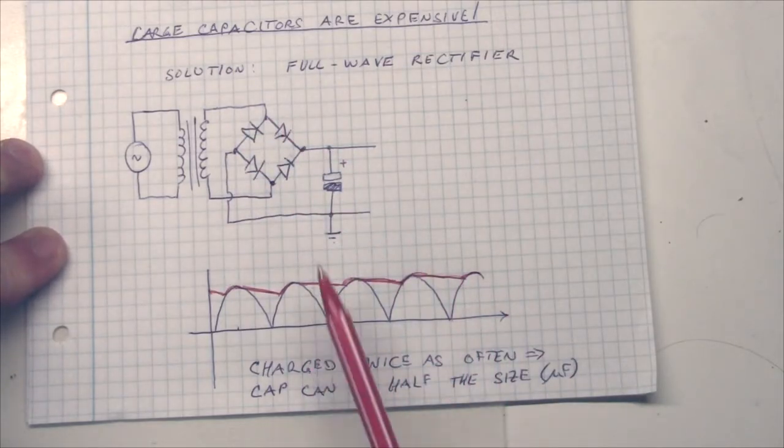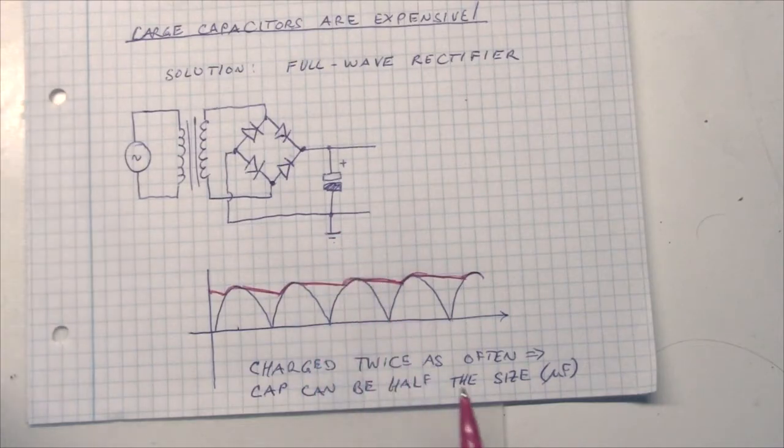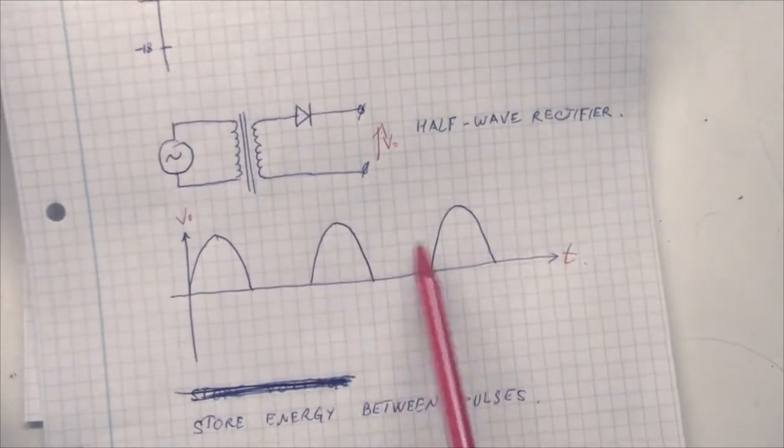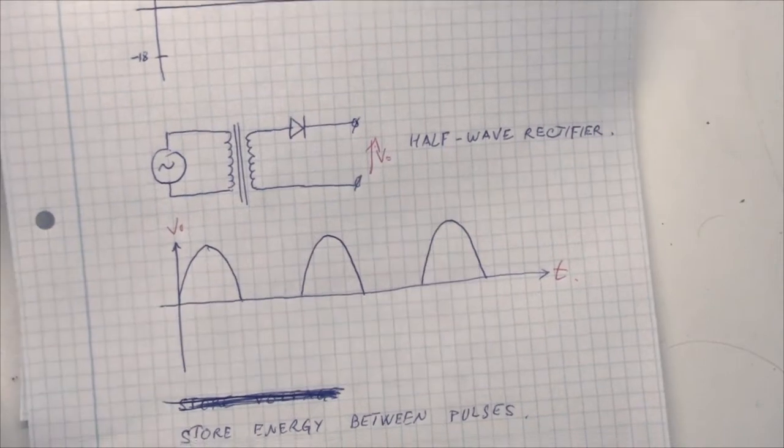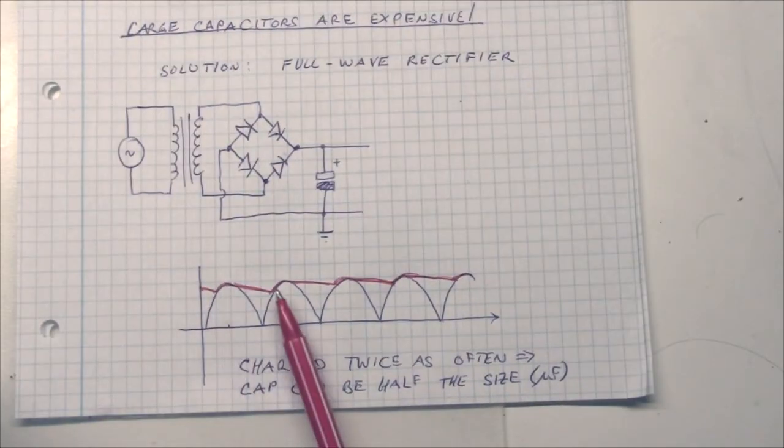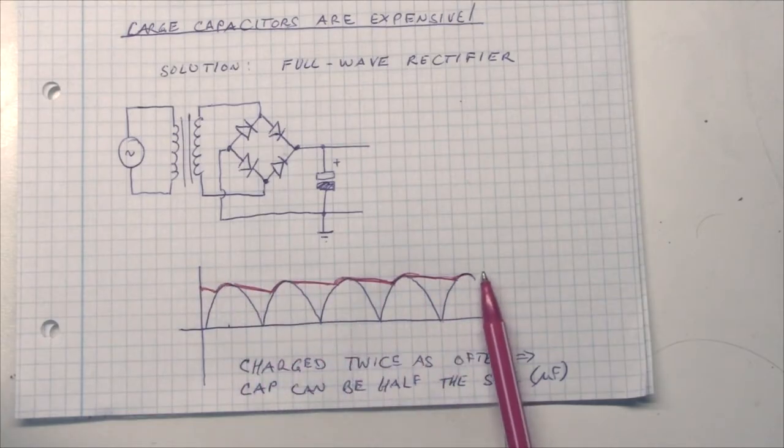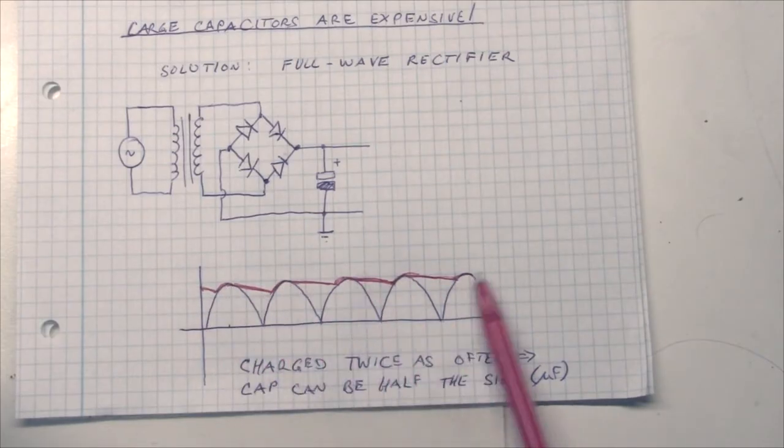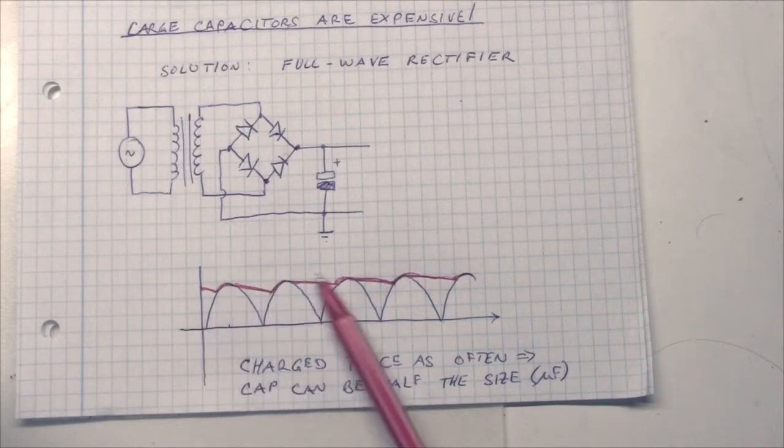So, of course, with the rectifier bridge like this, we will charge the capacitor twice as often. If we compare these pulses to these here, we will have additional pulse here from the negative period on the transformer. Of course, you are also charging the capacitor twice as often. So, the ripple noise will have a frequency that is double that of the line frequency. So, if you have 50 Hz in Europe, your ripple will now be 100 Hz, and in the US, you will have a 120 Hz ripple here.